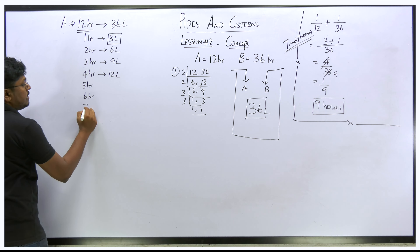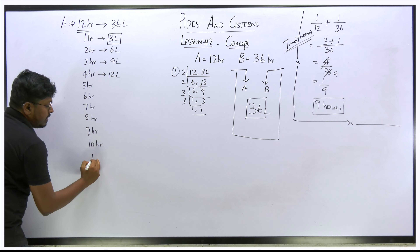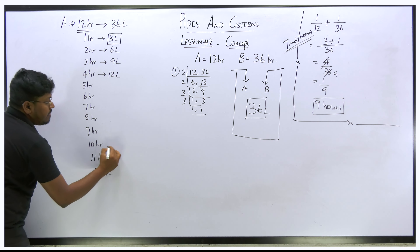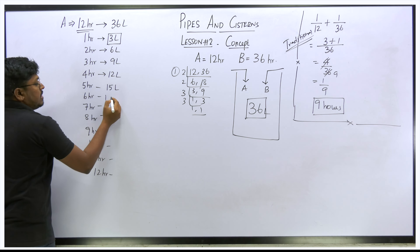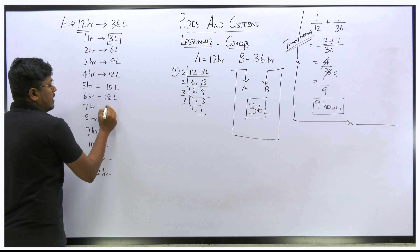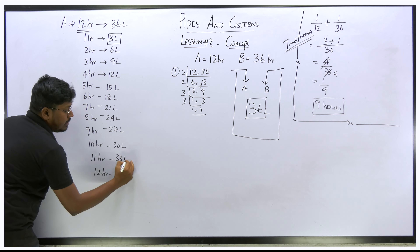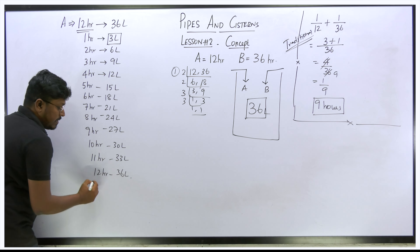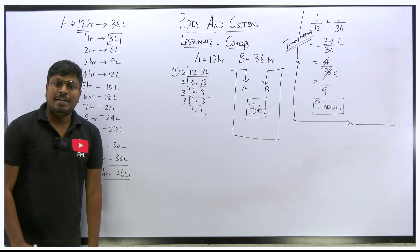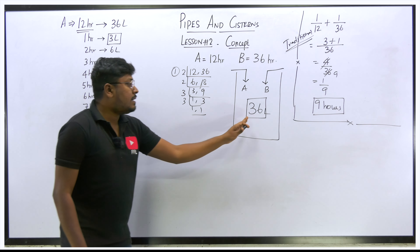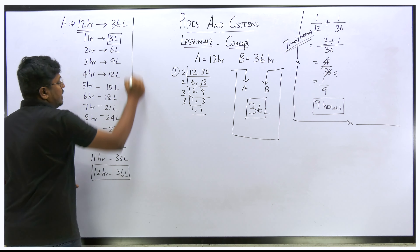Continuing the pattern for tap A: fifth hour 15 liters, sixth hour 18, seventh 21, eighth 24, ninth 27, tenth 30, eleventh 33, twelfth hour 36 liters. At the 12th hour, 36 liters of water is filled and the tank is full, because the tank capacity is 36 liters.